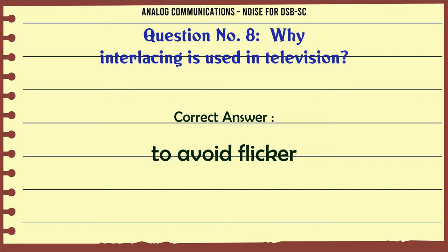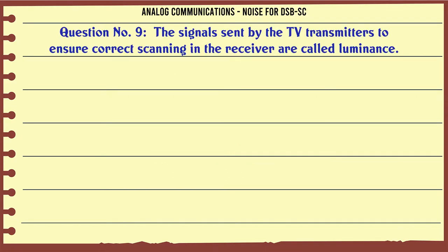The signals sent by the TV transmitters to ensure correct scanning in the receiver are called luminance. Option A: True. Option B: False. The correct answer is false.